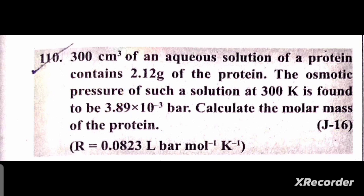The osmotic pressure of this solution at 300 Kelvin is found to be 3.89 × 10⁻³ bar. The temperature is 300 K and the osmotic pressure is denoted by π.